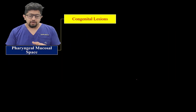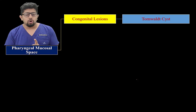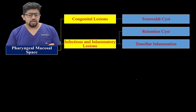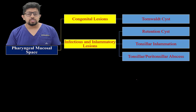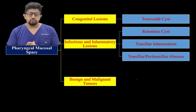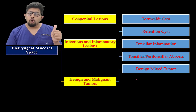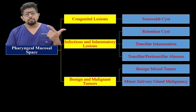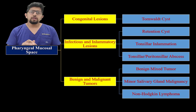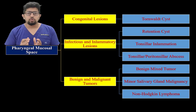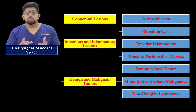The lesions to be studied in this space include congenital lesions such as Tornwaldt cyst, infectious lesions such as retention cysts, and inflammatory conditions like tonsillar inflammation, peritonsillar abscess, benign mixed tumors and pleomorphic adenoma of minor salivary glands, minor salivary gland malignancies, and non-Hodgkin's lymphoma. These will be discussed in the next few classes.